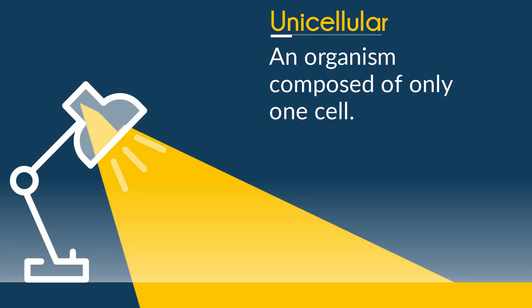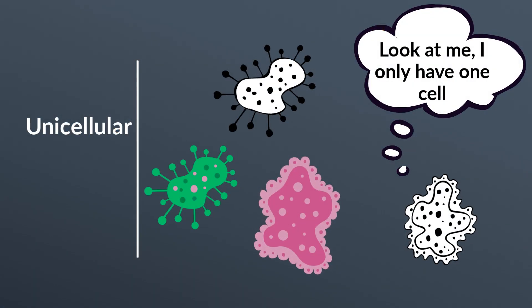A unicellular organism is an organism composed of only one cell. Some common examples include protists and bacteria.